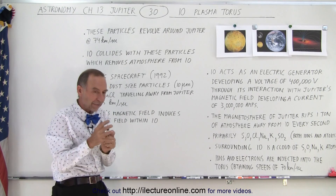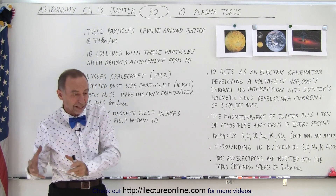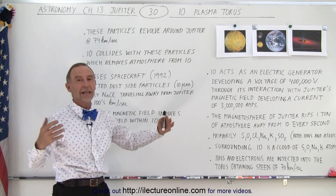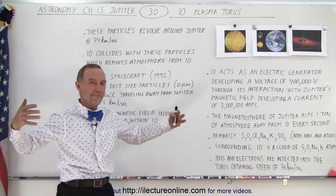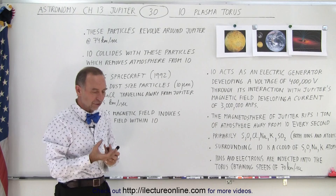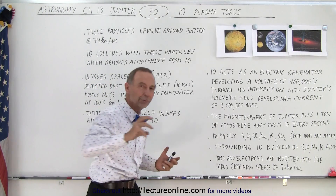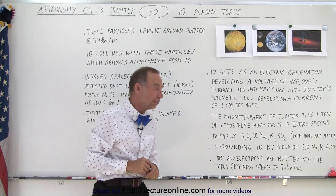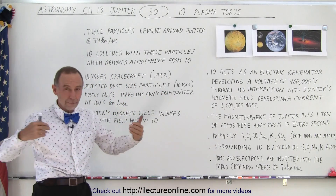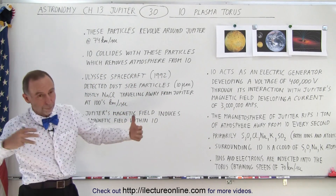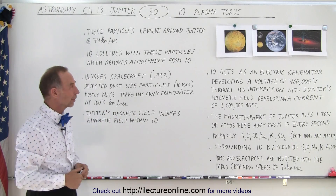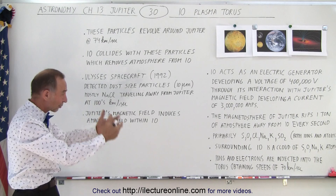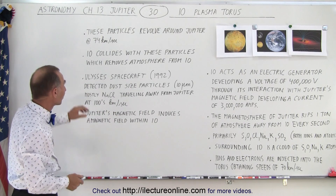Since Io travels at about 17 km per second and the particles in the torus travel at 74 km per second, you can see what's going to happen — there are going to be massive collisions. Essentially Io plows through the particles, or alternatively you can think of the particles slamming into Io. Because of that, it develops these currents and these magnetic fields.